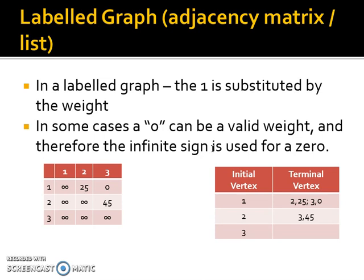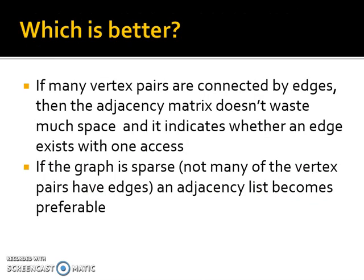So which is better? We've got an adjacency matrix and we've got an adjacency list. If there are many pairs that connect together, many edges between vertex pairs, then the best one to go for is an adjacency matrix. But if you've got lots of vertices with very few edges, then an adjacency matrix is going to waste lots of storage space.